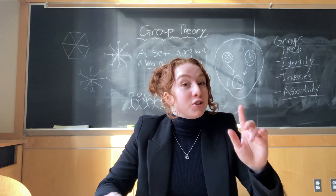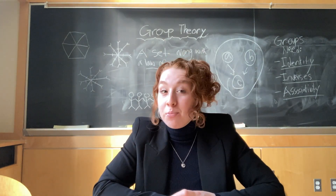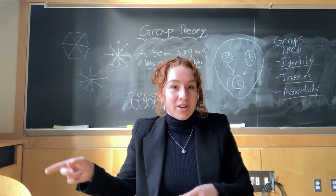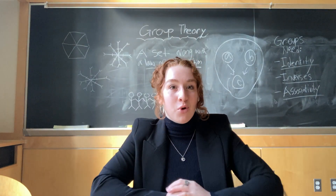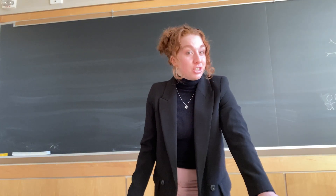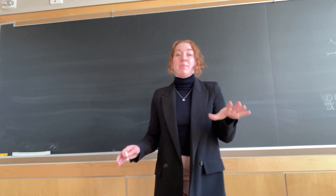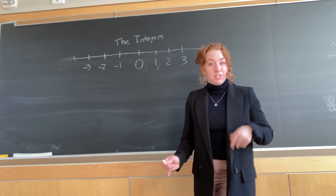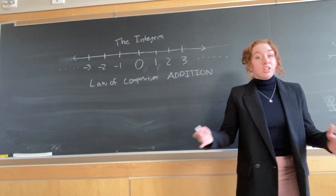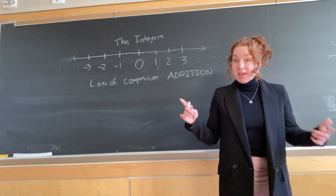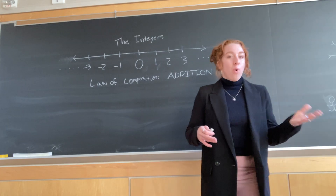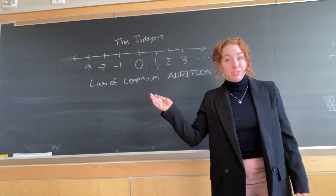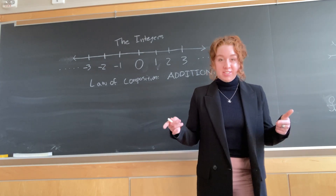Let's break this down with an example. There's one fundamental and extremely simple group that you're probably already familiar with: the integers. 0, 1, 2, 3, negative 1, negative 2, negative 3 — these form a group. In order to show that the integers are a group, we have to show that the integers meet the definition of a group. First off, we need a law of composition to combine two integers to get a third integer. Here, we can use addition. Addition works because we can combine any two integers by adding them and get a third integer: 1 plus 2 is 3, 1 plus negative 1 is 0, negative 500 plus 502 is 2. And all of these elements are still within the set of integers.